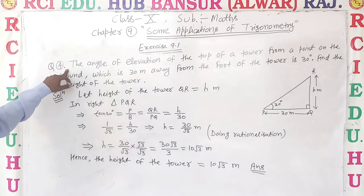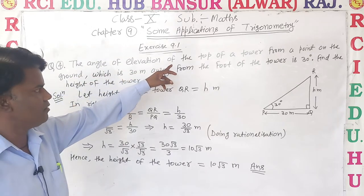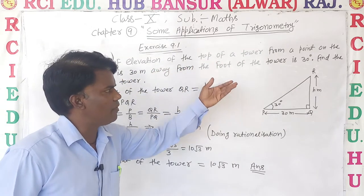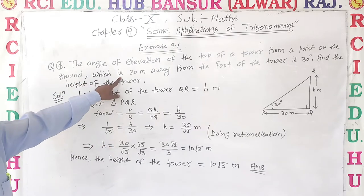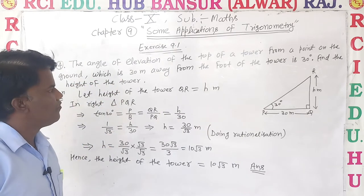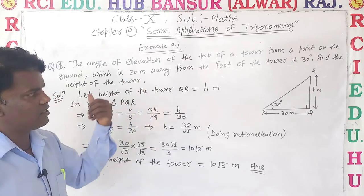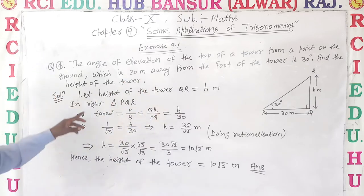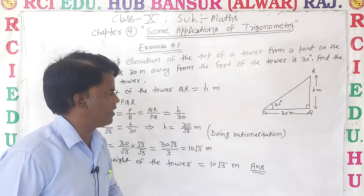Question number 4. The angle of elevation of the top of a tower from a point on the ground which is 30 meters away from the foot of the tower is 30 degrees. Find the height of the tower. So, we need to find the tower's height.